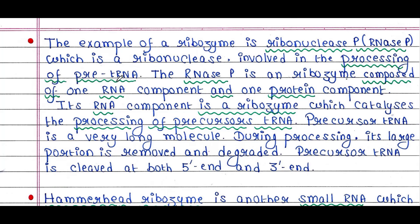An example of a ribozyme is ribonuclease P, or RNase P, which is involved in the processing of pre-tRNA. RNase P is a ribozyme composed of one RNA component and one protein component. The RNA component is the ribozyme which catalyzes the processing of precursor tRNA.